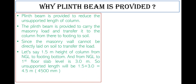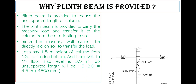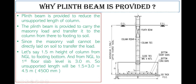Let's say 1.5 meters is the height of the column from the NGL to the footing bottom. From the existing ground level (EGL) to the depth of the foundation is 1.5 meters. From the NGL or EGL to the first floor slab level is another 3.0 meters, where the column continues upward and the slab is received.